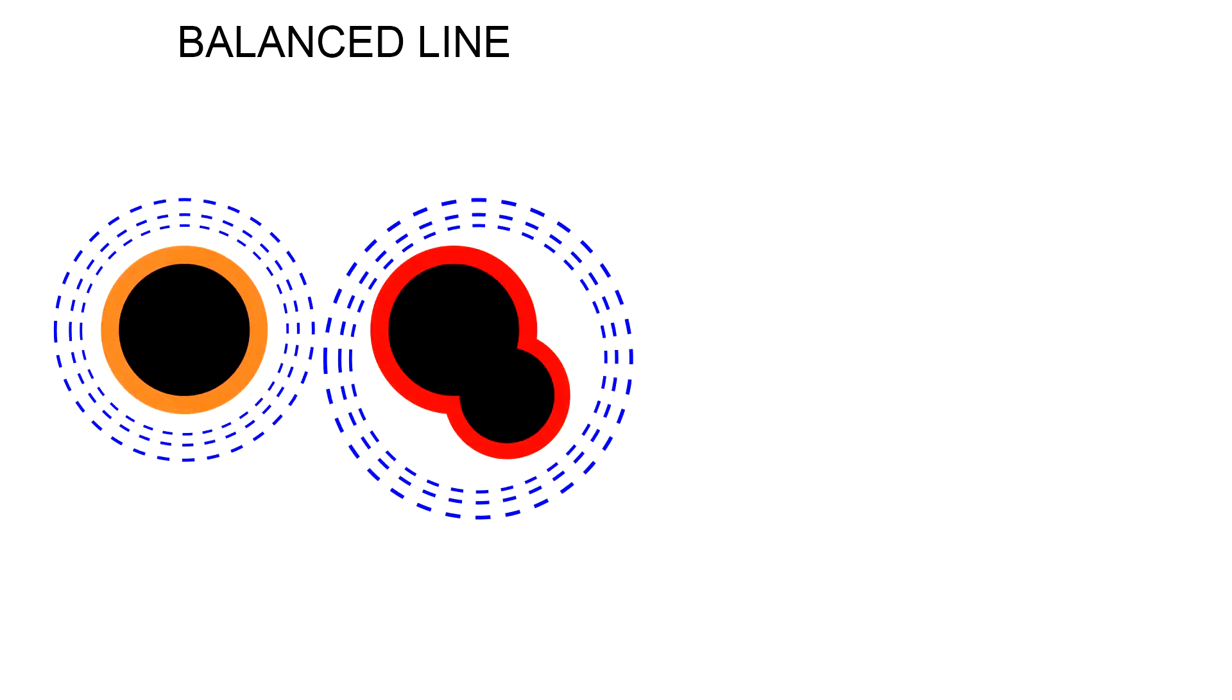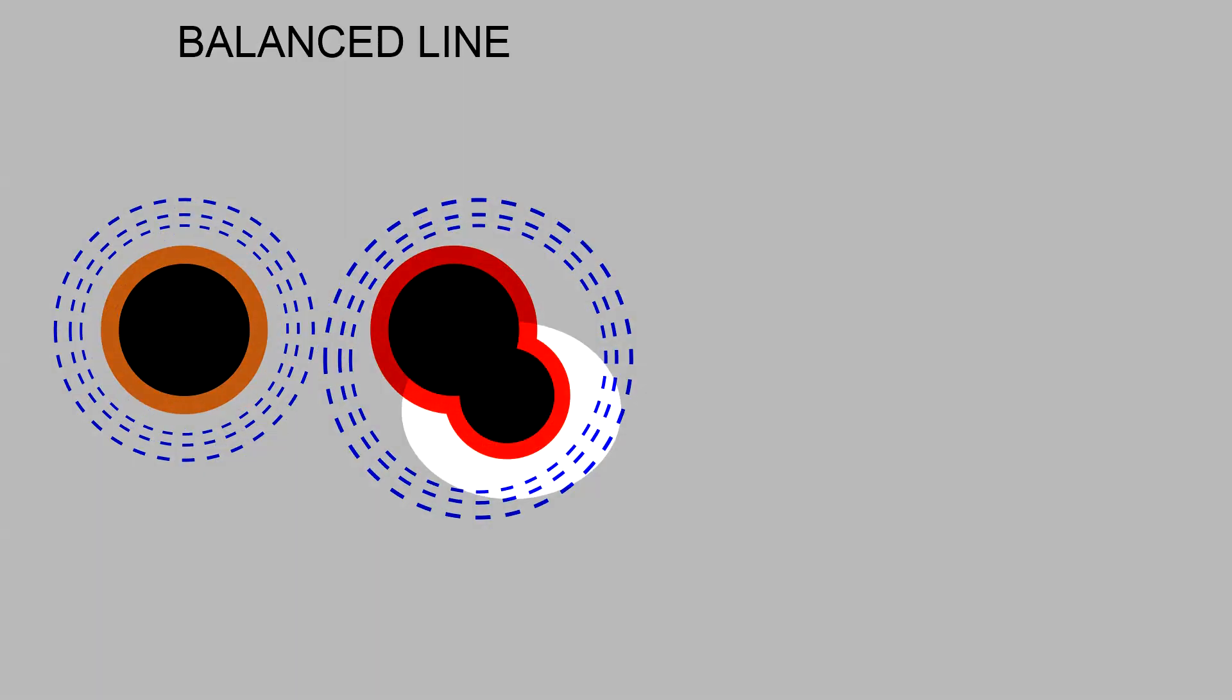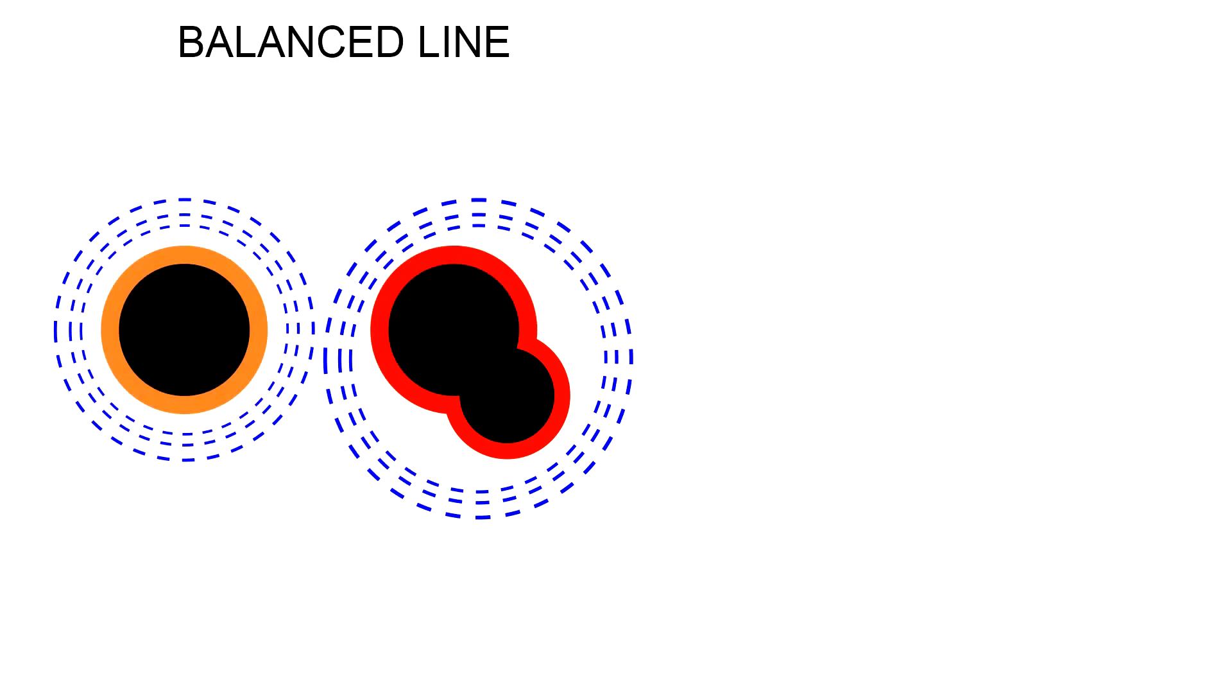This is what happens if we connect something externally to a parallel wire line. The surface used by the line current changes. The shape of the generated field changes and it isn't symmetric anymore. The field is not cancelled and the line radiates.